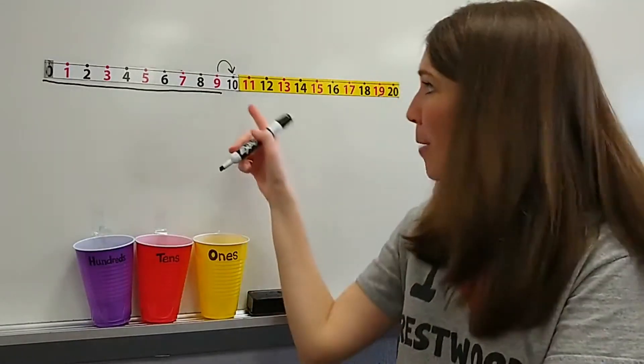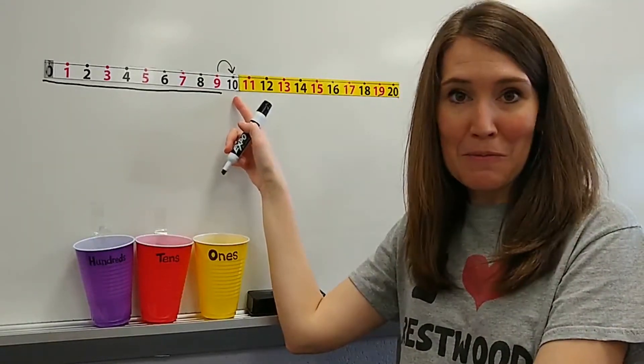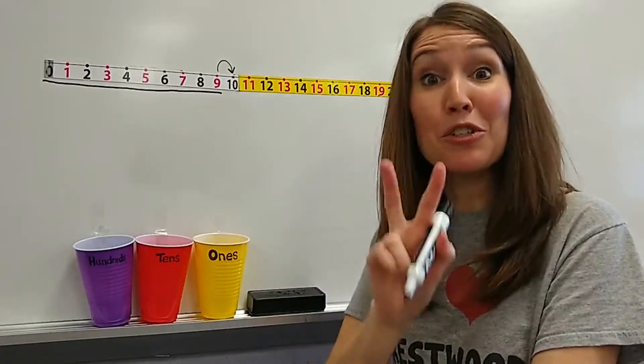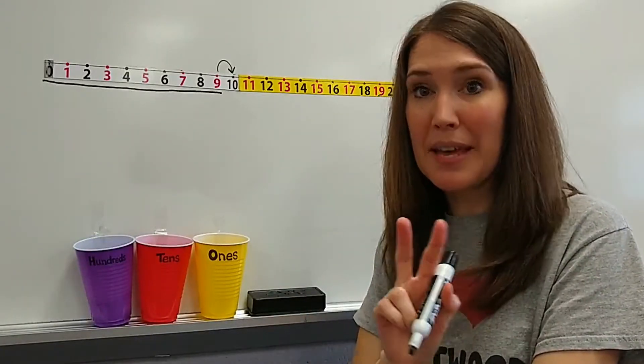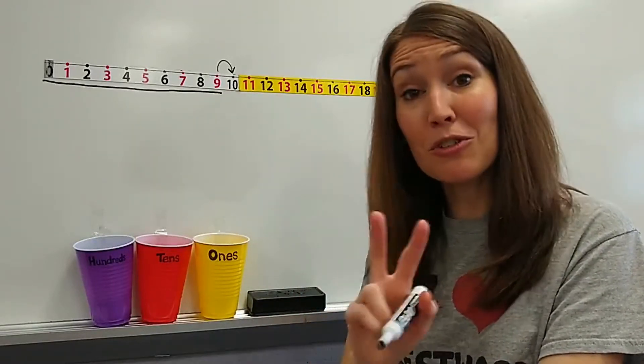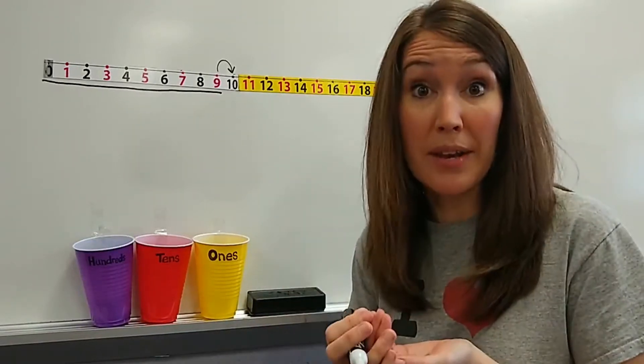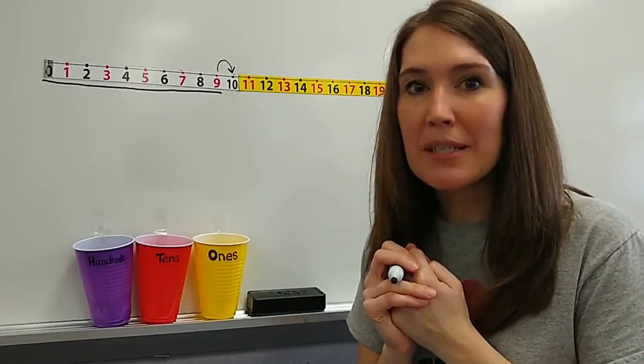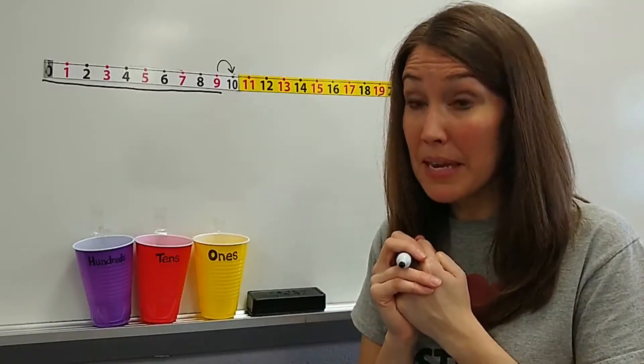What do you notice about the number ten that's different? It's a two-digit number. That's right. That means it looks like two different numbers, but it's not. It's two digits that make one number, and they mean something. So we're going to spend a little more time talking about what they mean.